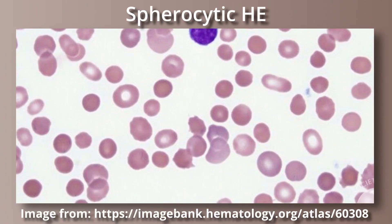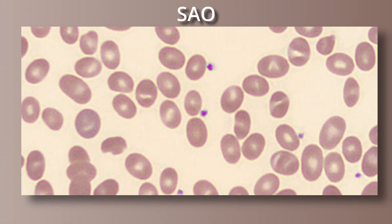Spherocytic HE morphology is variable and has less prominent elliptocytosis with spherocytes and microspherocytes. The proportion of spherocytes and elliptocytes varies. SAO will have very distinctive red cell morphology with the elliptocytes being rounded and oval. Often they will have a large transverse bar that divides the central pallor area.